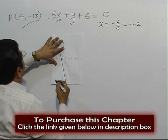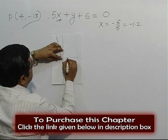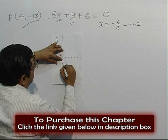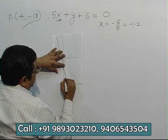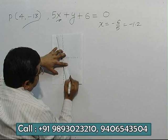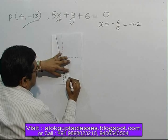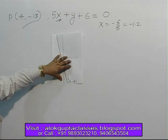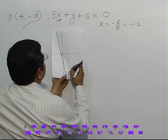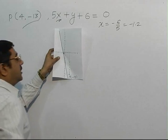Plot the point (4, -13): 1, 2, 3, 4 - minus 13 - 1, 2, 3, 4, 5, 6, 7, 10, 11, 12, 13. So, (4, -13) is somewhere here. This point is. Now, this point is here. It is like this. This image find out.